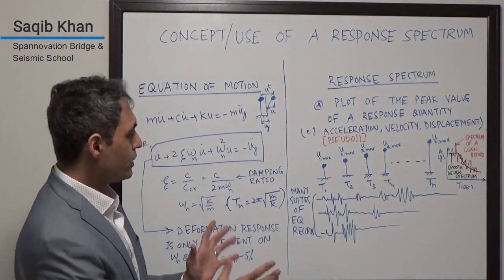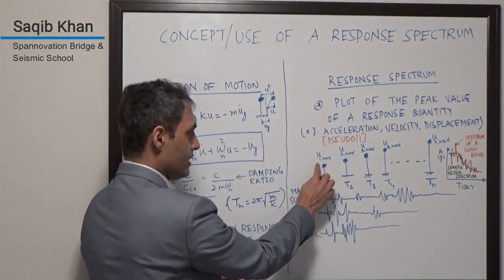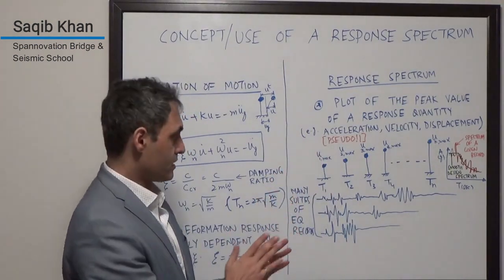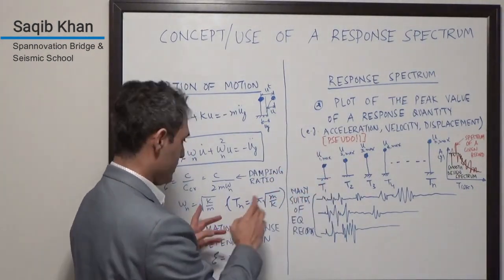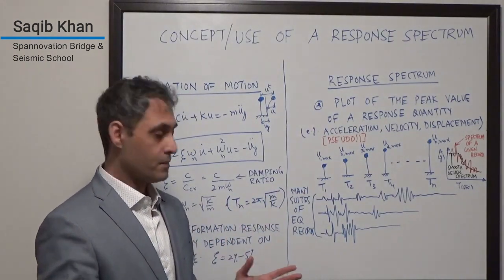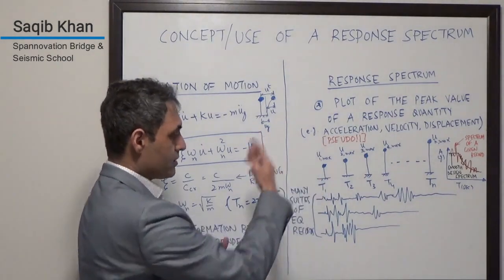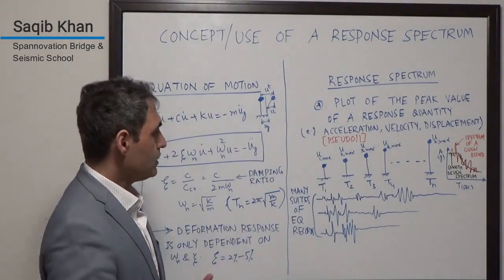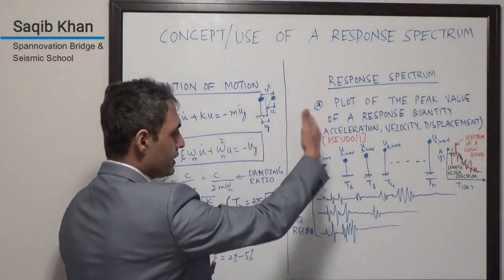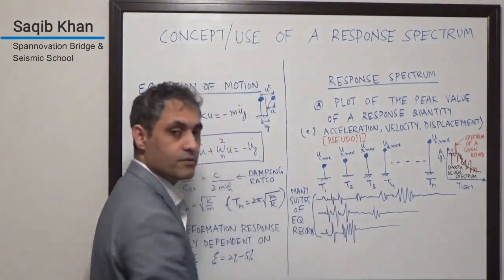What we do is we take a system and we know that whatever the mass or the stiffness of the system is, as long as its natural frequency matches with another system, which may have a different mass and a different stiffness, the two systems will give us the same response. So really we pick one period or one natural frequency and we run it through many, many suites of earthquake records.